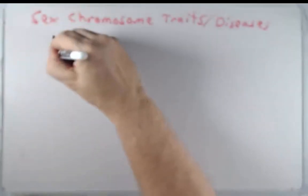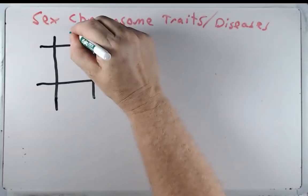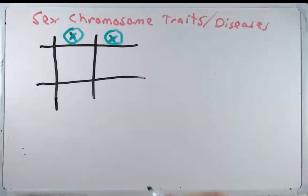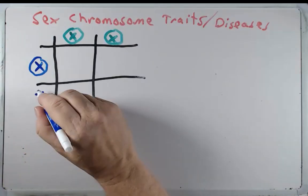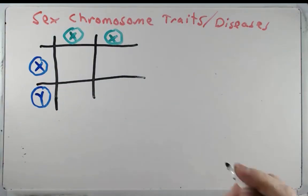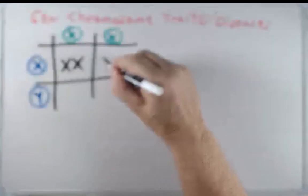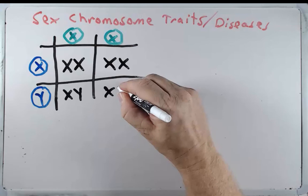Now let us consider traits on the sex chromosomes. Females have two X chromosomes, so each of their gametes will have one X chromosome after meiosis. Males are XY, so half of their gametes will contain an X chromosome and half will contain a Y chromosome. When they have kids, half of them will be females (XX) and half will be males (XY).